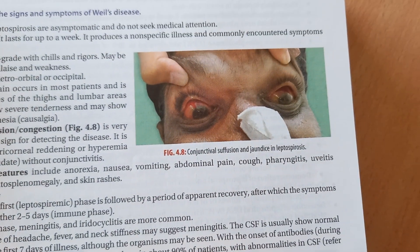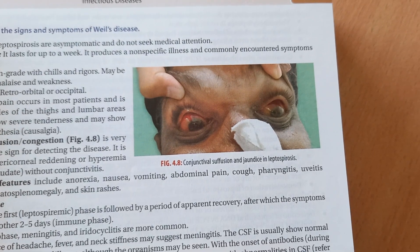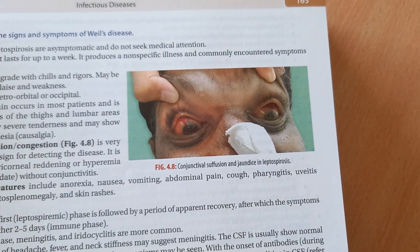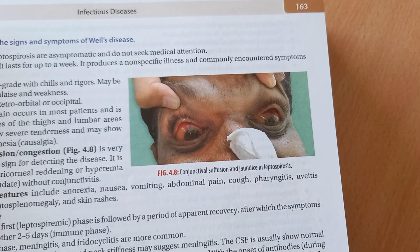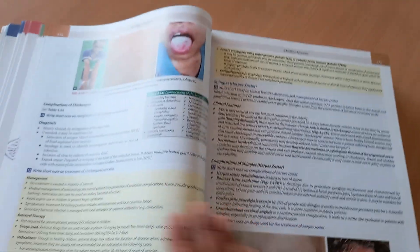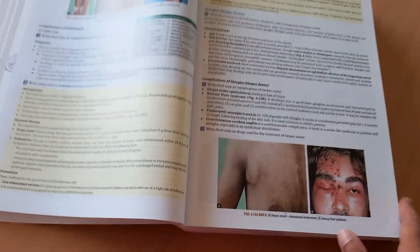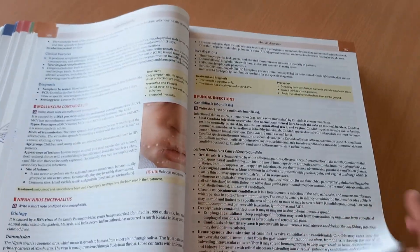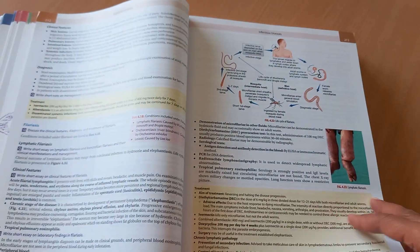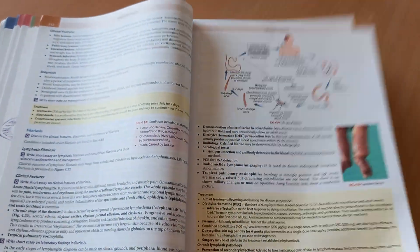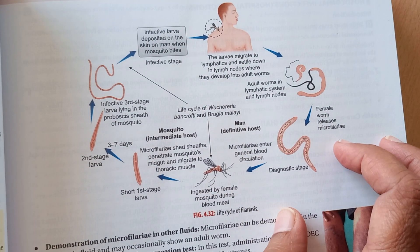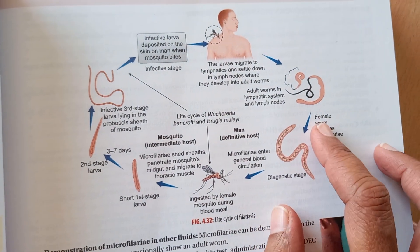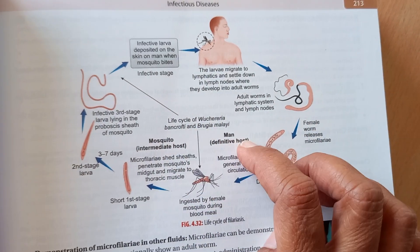There are some clinical images here — for example, conjunctival suffusion and jaundice in leptospirosis. A few more clinical images follow. I'm guessing this one is filariasis, Wuchereria bancrofti — yeah.